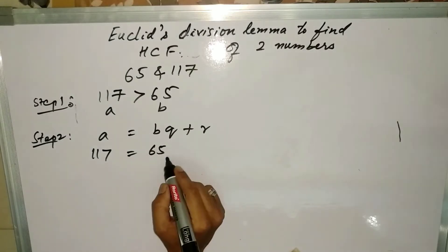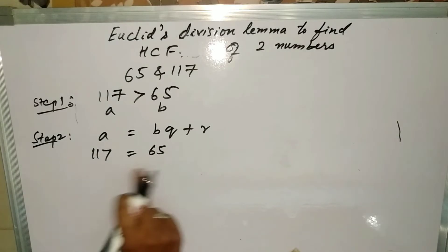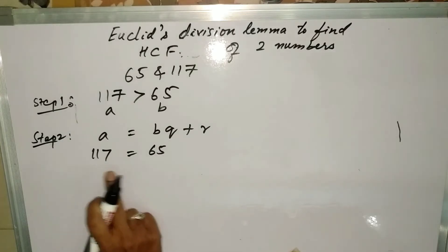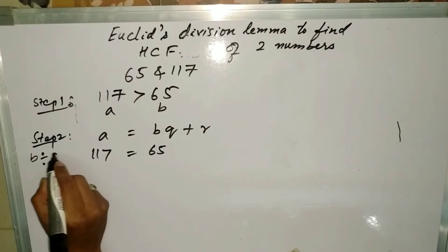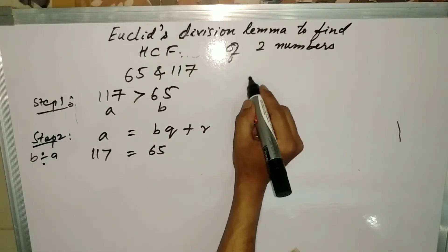Now you need to divide this number. You have to divide a by b, so we will divide in the rough column.